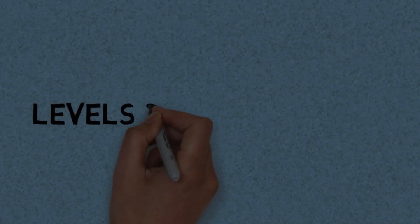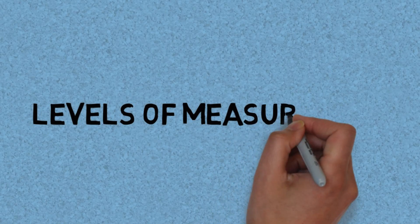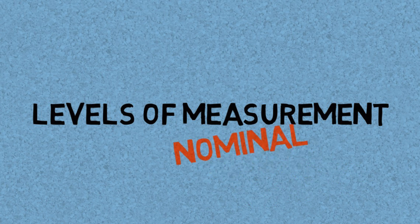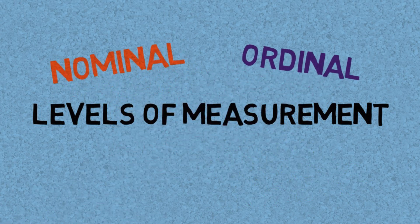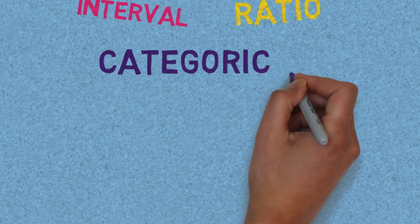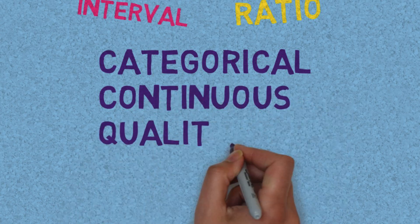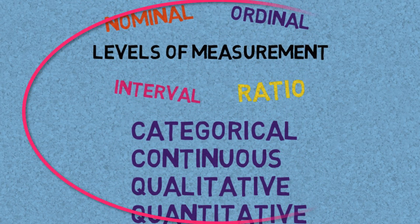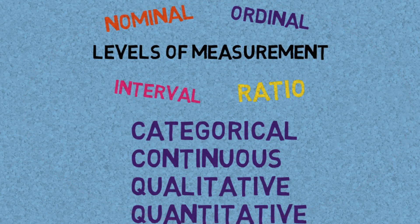You may have heard about levels of measurement assigned to variables in statistics, specifically nominal, ordinal, interval, and ratio level data. And you have probably also heard other terms used to describe variables, such as categorical, continuous, qualitative, and quantitative. I am going to connect all of these statistical dots for you in this brief review of Levels of Measurement.